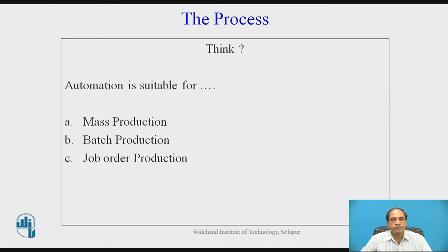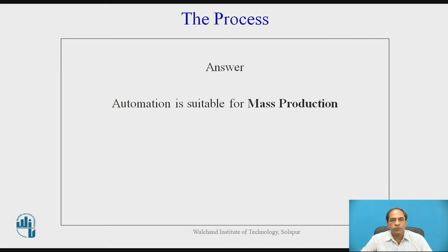Now let us take a simple example: automation. Automation is a very good concept nowadays — it tries to achieve maximum efficiency with minimum time and best safety, quality, and reliability. Is automation suitable for all types of production: mass, batch, and job? The obvious answer is that automation is suitable for mass production only. Automation cannot be suitable for a job type of production because automation involves a lot of investment and features like rigidity of the manufacturing processes.